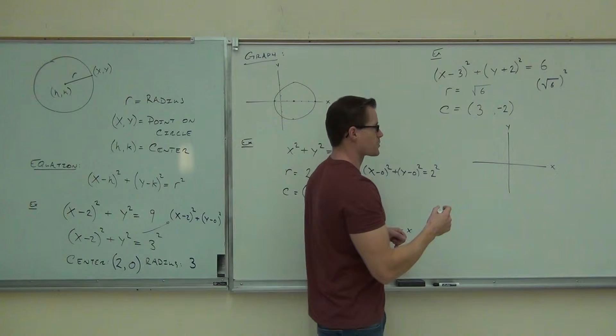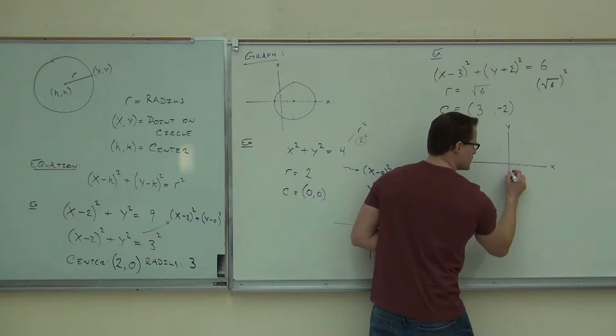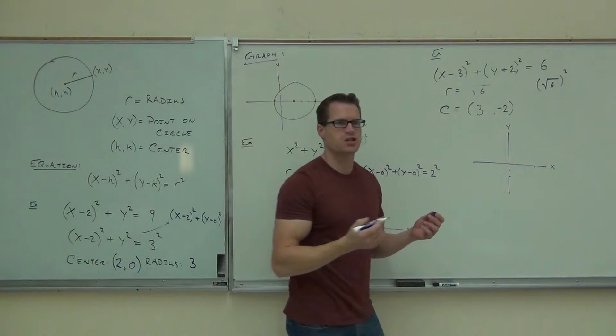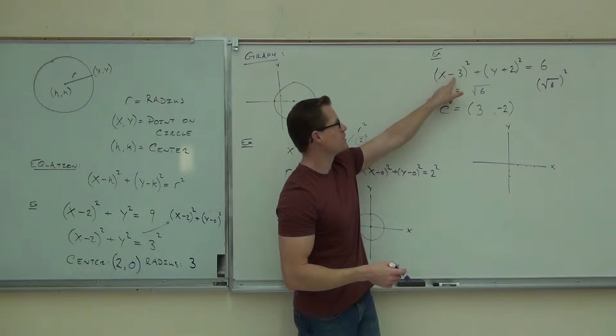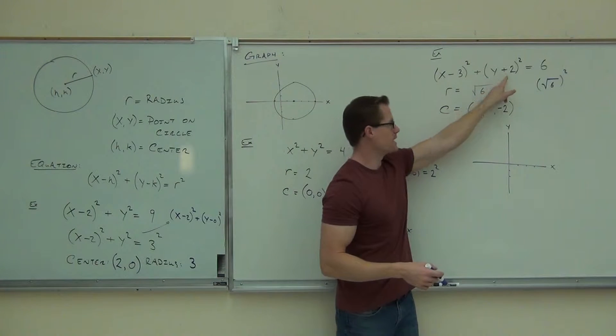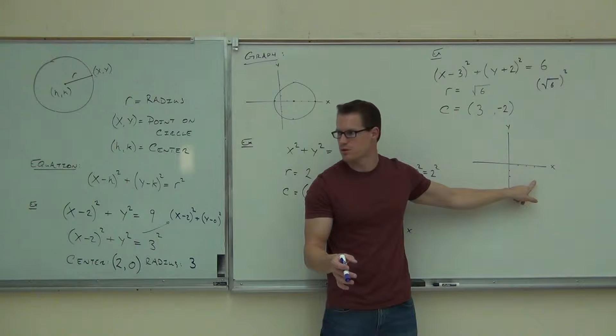So if we're center 3, negative 2, that's 1, 2, 3, down 2. Just like our shifting would work, look at that. Isn't this kind of neat for you? I hope it's neat for you. So you can shift this to the right 3 and down 2, and that's exactly where your center is going to be, exactly what we thought it was going to be. Are you with me on that?